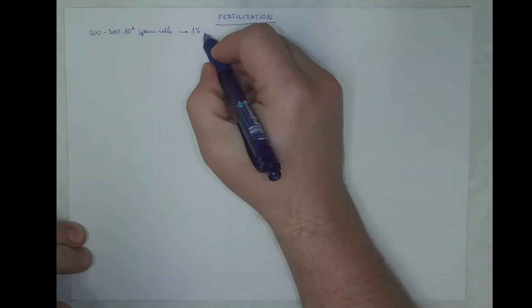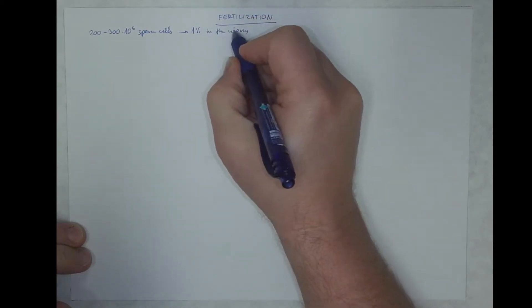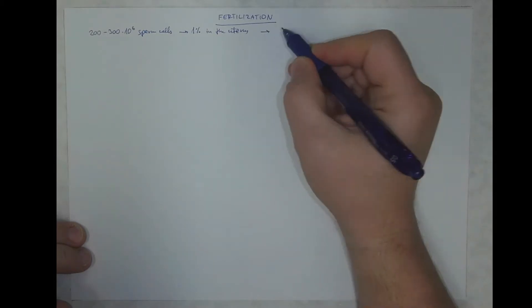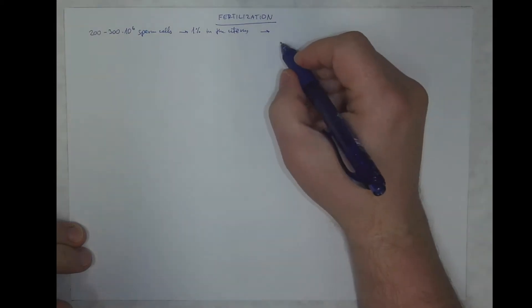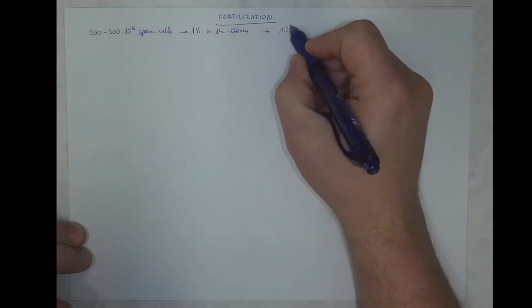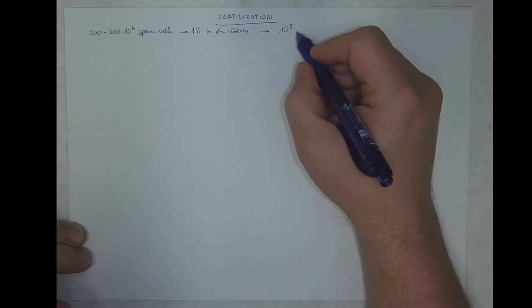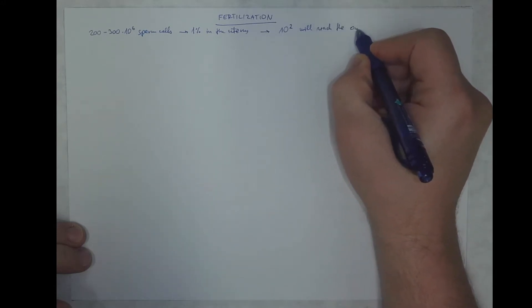Approximately 1% of this population of sperm cells will reach the uterine cavity and they will enter the fallopian tube. And the meeting point with the oocyte will be reached by approximately hundreds of sperm cells.